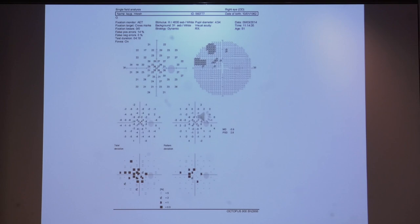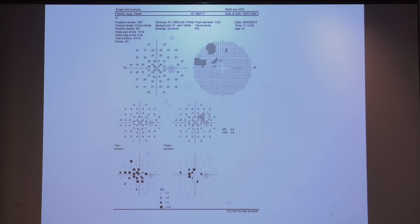This is a different type of printout from the octopus perimeter itself. This is a Humphrey like printout. You can see a central visual field defect here, but this is just to show that the octopus can also give a printout in this format to make it easy to compare with the Humphrey's visual field as well as for people who have more comfort reading the Humphrey's printouts. Thank you for your patient listening.